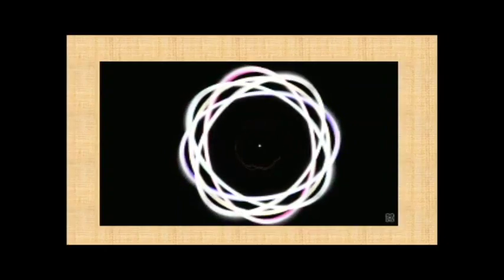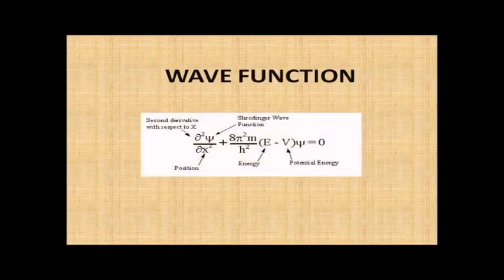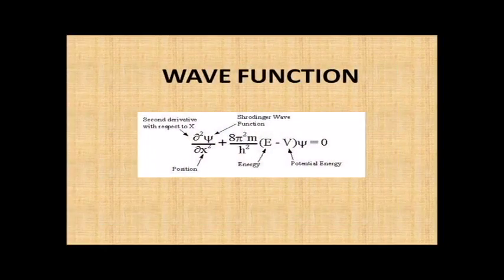Quantum mechanics tells us that the position of a moving particle at high speed cannot be determined, but we can calculate its probability by an equation called the wave function. The wave function tells us the probability in different respects, for example space, time, etc.